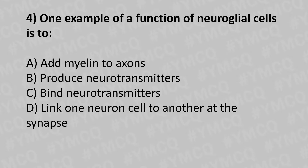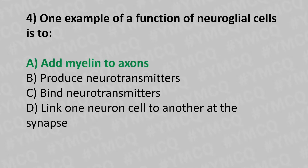Let's move to our fourth question. One example of the function of the neuroglial cell is to: Option A: add myelin to axons. Option B: produce neurotransmitters. Option C: bind neurotransmitters. Option D: link one neuron cell to another at the synapse. And the answer is option A: add myelin to the axons.